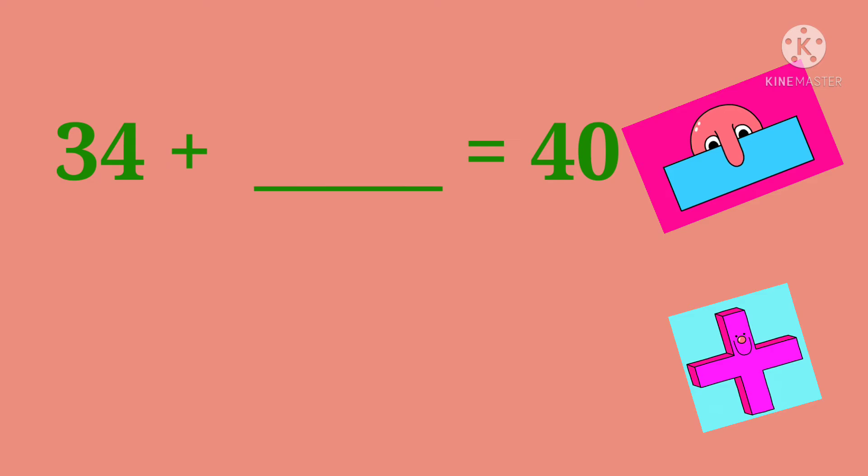34 plus blank is 40. So start counting after 34 and stop on 40: 35, 36, 37, 38, 39, 40. I opened six fingers, so the answer here is 6. 34 plus 6 is 40.